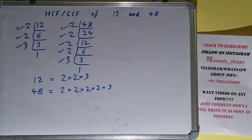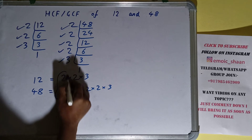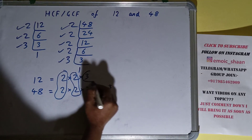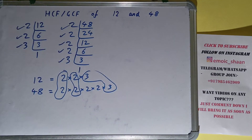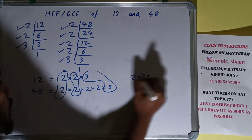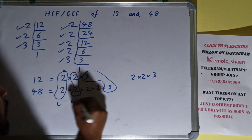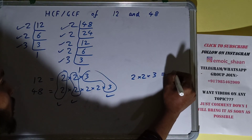The next thing you need to do is circle out the common prime factors. We have this 2 in common, this 2 in common, and this 3 in common. Do we have anything extra in common? No. So we have two 2s and one 3 in common, and the answer will be 12.